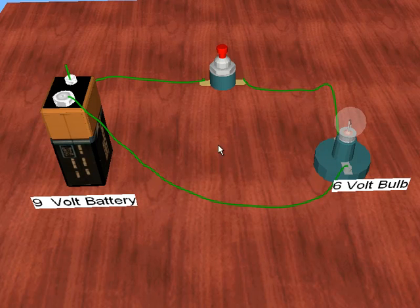If I try to hook up a 6 volt bulb to a 9 volt battery, the result will be the destruction of the bulb. I need to find a way to drop the voltage of the battery to 6 volts so that the bulb can run.